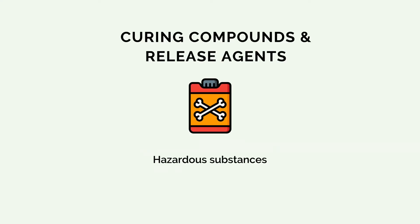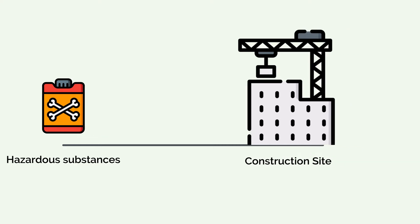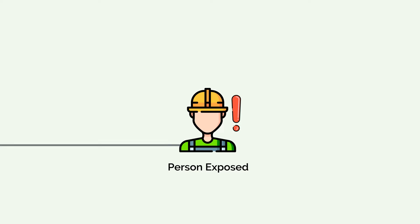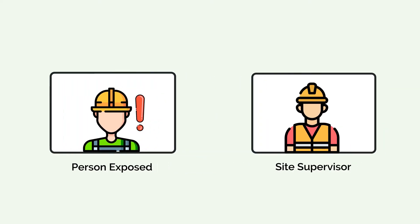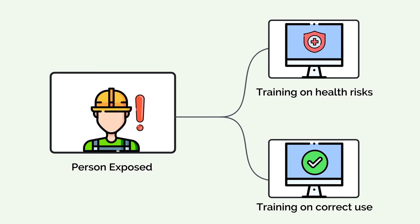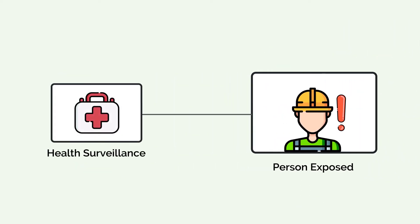If any hazardous substances, including curing compounds, are used on site, then a Safety Data Sheet must be obtained and made available to all persons who may be exposed to the substance. The person with control must consult with all persons who might be exposed to the substance about the intention to use the substance and the safest method of use. Persons likely to be exposed must receive training on health risks, control measures and correct use. They must also be informed about the need for and details of health surveillance where appropriate.